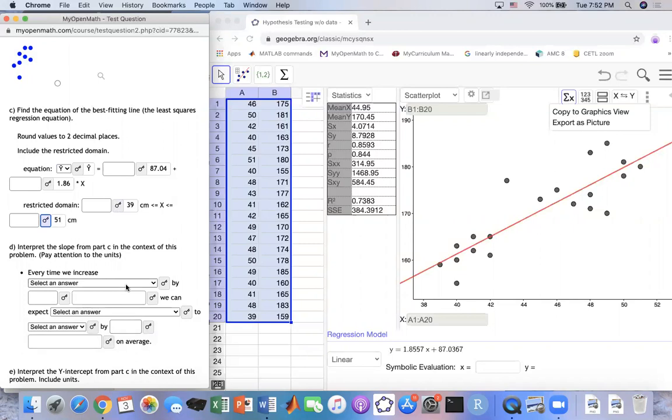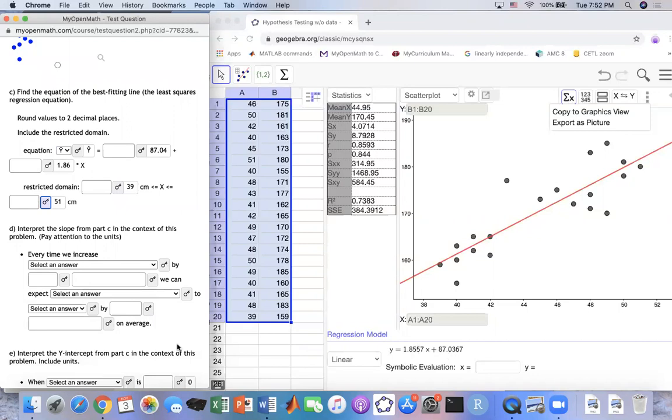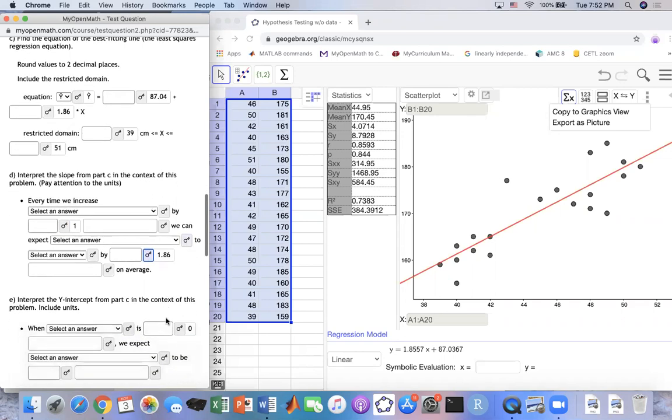The slope tells us that any time I go one unit to the right, how many I go up. That's what the slope stands for. So that means I go one unit to the right, I go up 1.8557. Anytime I go one, then I will go up to 1.86. That's the number for you.